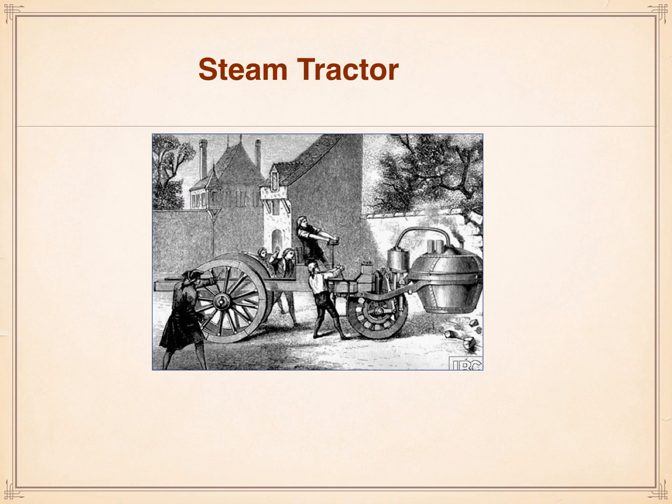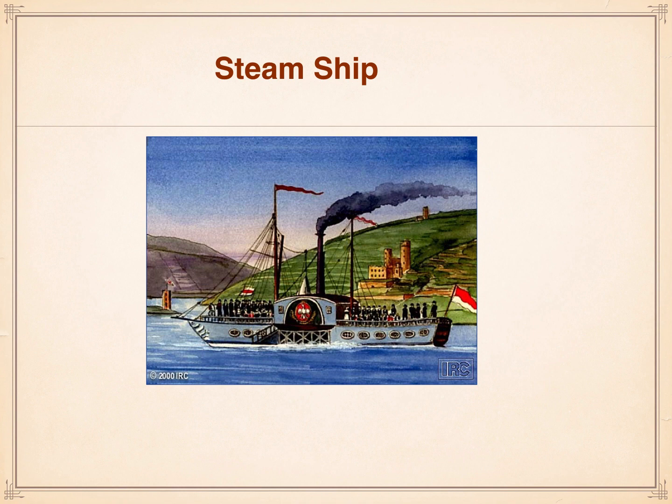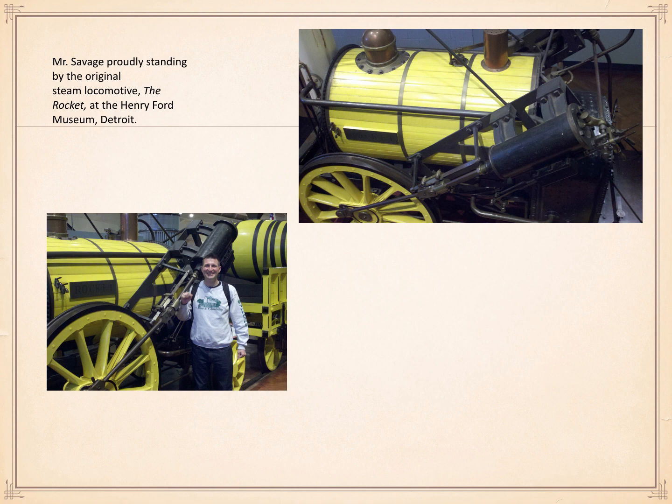The steam tractor was the next application — if you can take a steam engine, why not put it on a vehicle with four wheels and see if it can move? The steam tractor was not a long-lived technology. The steam ship, however — Robert Fulton's steamboat, the Claremont — was the first steam-powered riverboat and transformed transatlantic crossings. And then, of course, the railroad.